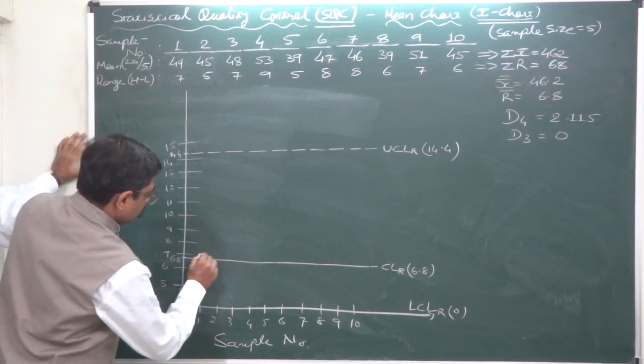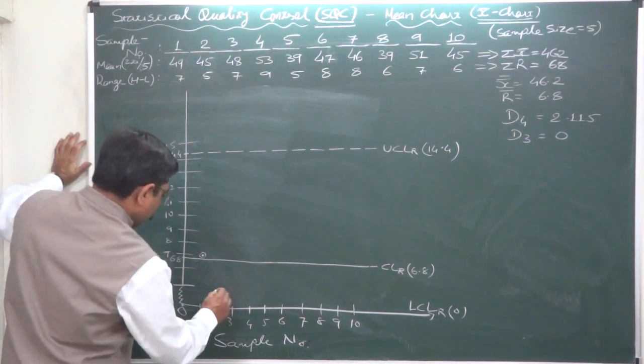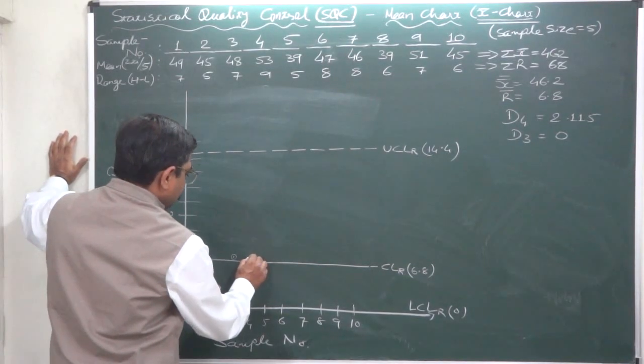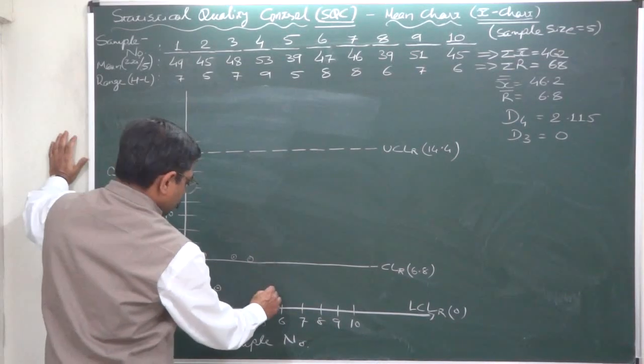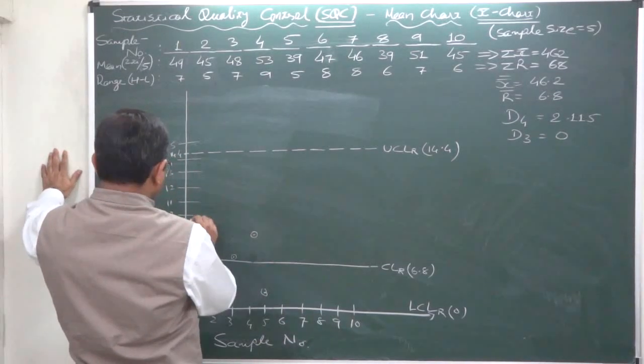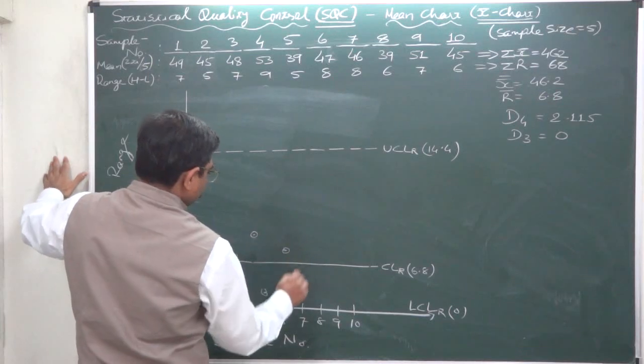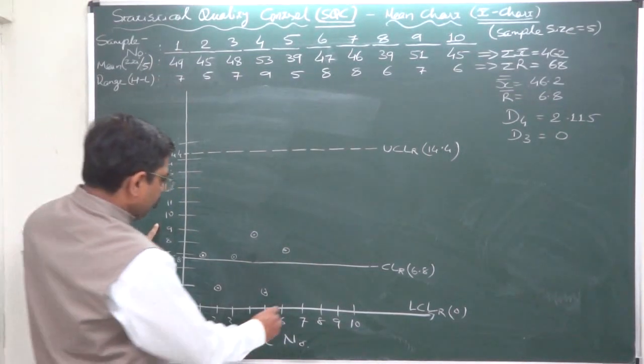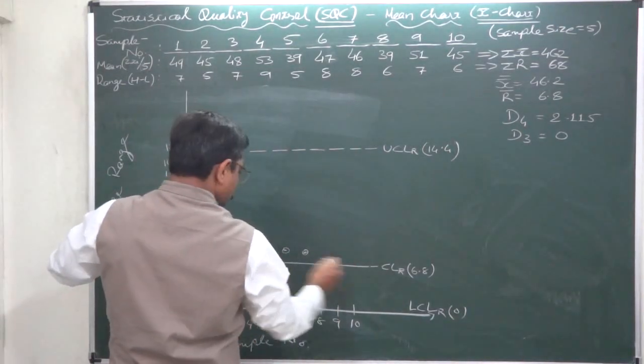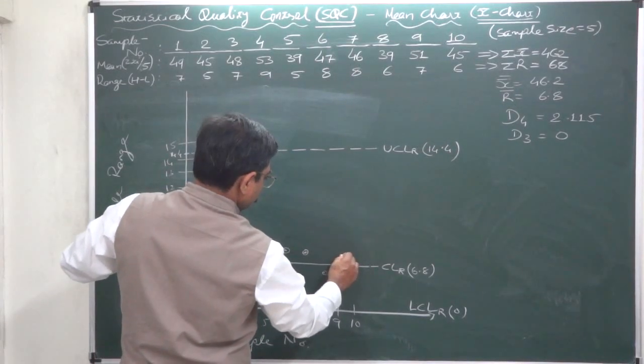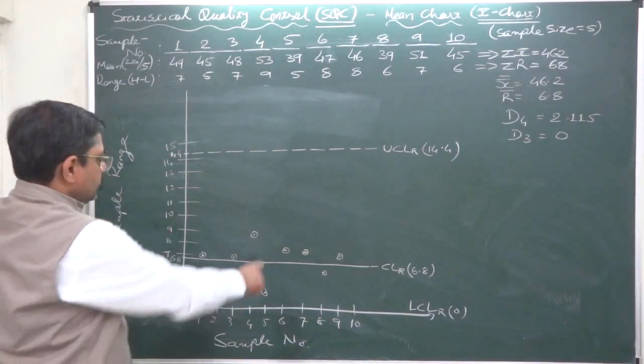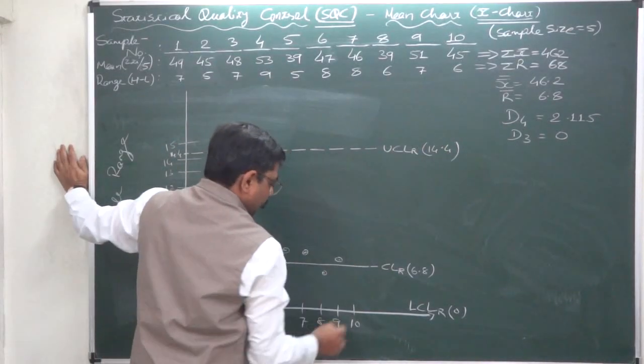Now plotting the sample points. For sample 1 the range is 7, for sample 2 the range is 5, for sample 3 the range is 7, for sample 4 the range is 9, for sample 5 the range is 5, for sample 6 the range is 8, for sample 7 also it is 8, for sample 8 it is 6, for sample 9 it is again 7, and sample 10 is 6.